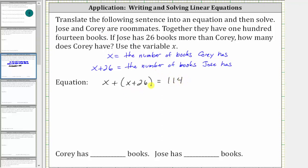Now if we solve the equation for x, we can determine the number of books that Corey has, and then once we have x, we can determine the number of books that Jose has, which is x plus 26.